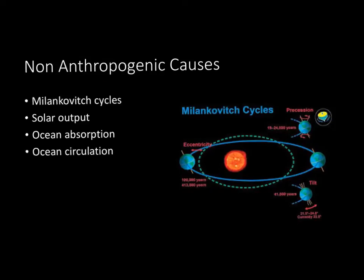Let's take a look at non-anthropogenic causes — anthropogenic meaning human-caused. There are those people that don't believe humans are the cause of global warming, and while nearly 100% of scientists disagree with that, there are alternate theories. There are four main ones: the Milankovitch Cycle, which refers to uneven heating of the world due to rotation; solar output; ocean absorption; and ocean circulation. These describe cyclic changes in Earth's orbit, variation in energy released by the sun, absorption of CO2 by the oceans, and ocean circulation patterns.